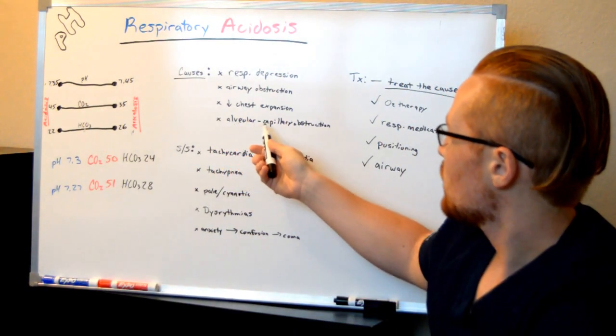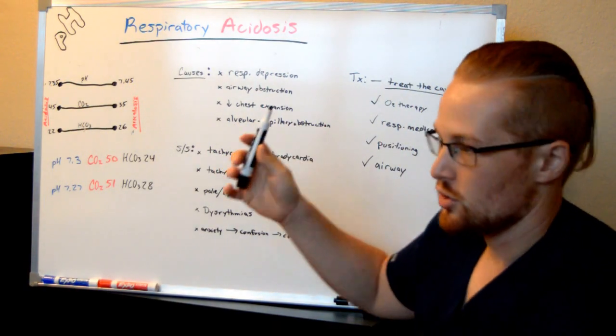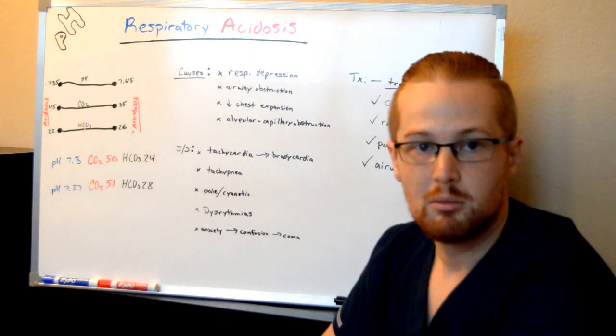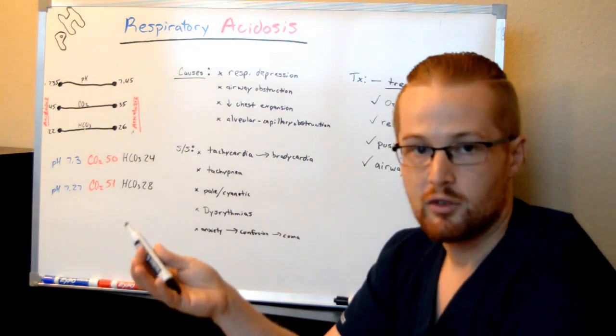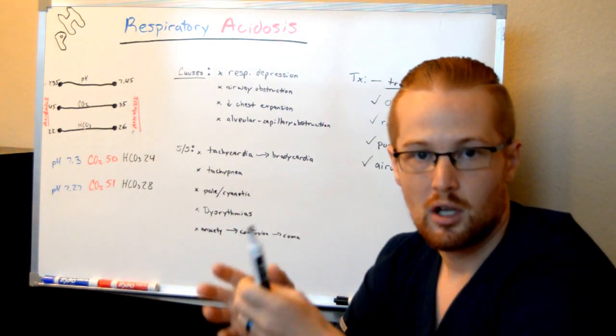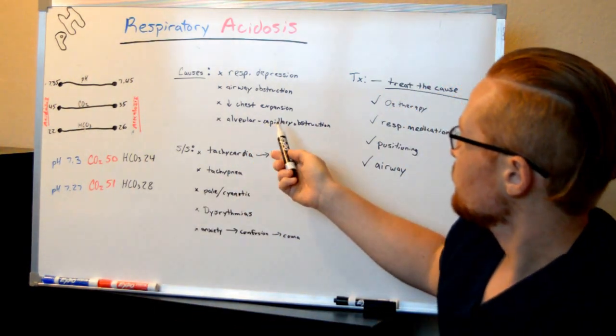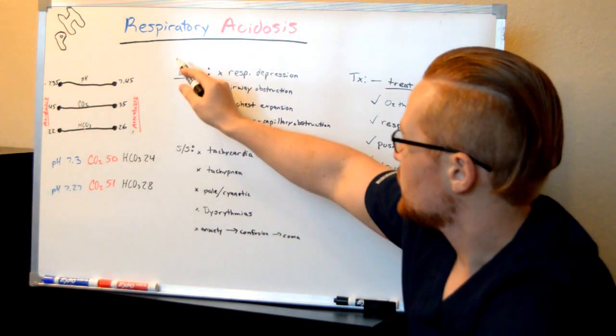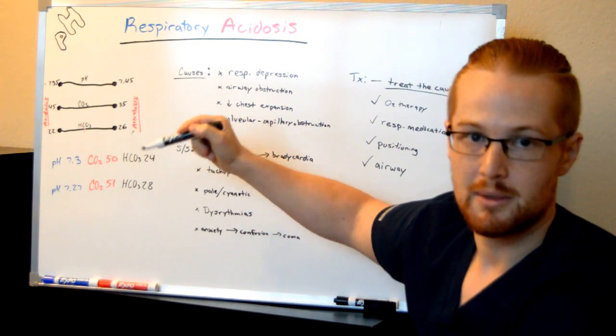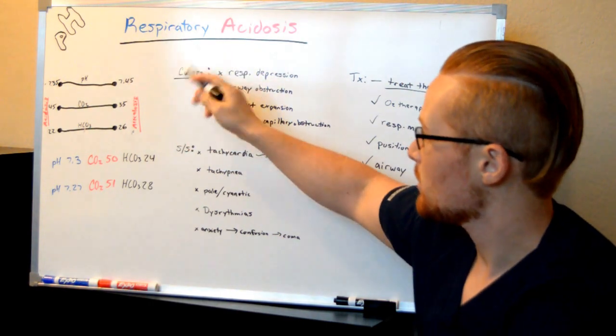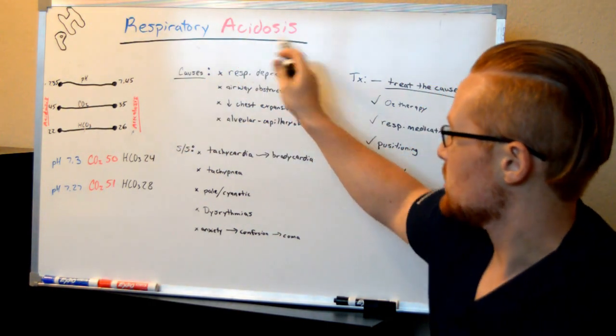Or alveolar capillary obstruction, such as pulmonary embolisms, which are blood clots in the lungs, or pulmonary effusions, which would be fluid on the lungs and in those areas. So the underlying cause here you can see is increased CO2. Remember, carbon dioxide is carbon diacid. So high carbon dioxide levels lead them to this acidosis.